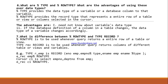What are %TYPE and %ROWTYPE, and what are the advantages of using these over direct data types? %TYPE provides the data type of a variable or database column to that variable. %ROWTYPE provides the record type that represents an entire row of a table, view, or columns selected in a cursor. The advantages are: you need not know the variable's data type, and if the database definition of a column changes, the variable's data type changes accordingly.